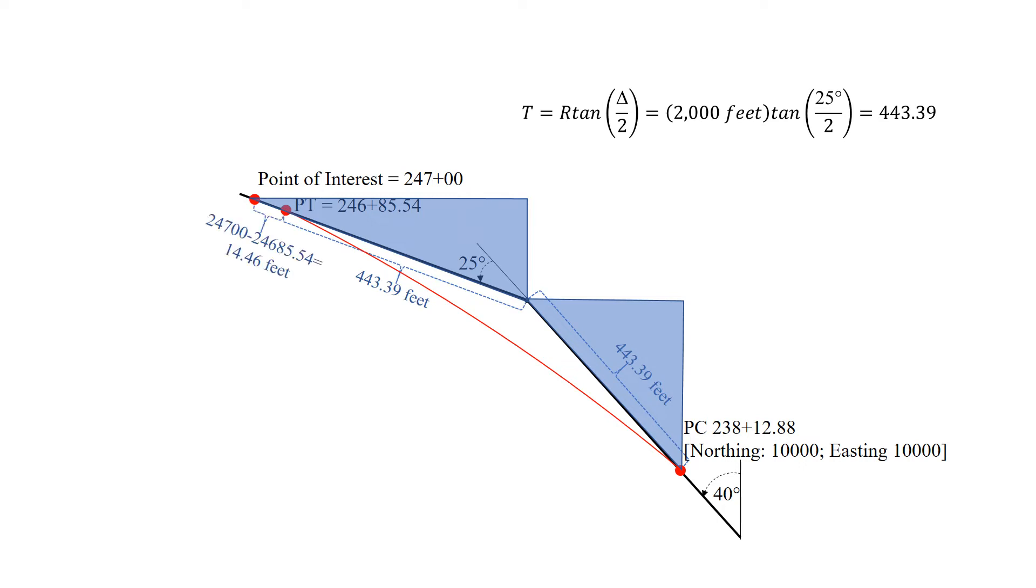We also have this small little portion here to get us to the point of interest, which is 14.46 feet. That's just subtracting the point of interest 247, subtracting the PT station from that will give us that distance. Just a little extra distance on that triangle on the hypotenuse to get us to our point of interest.